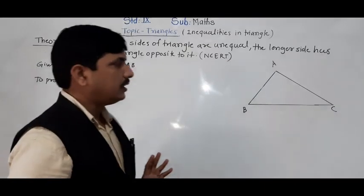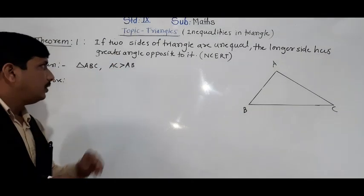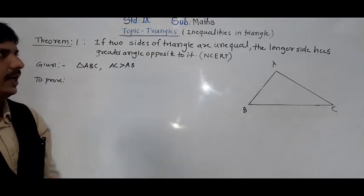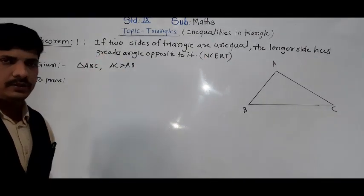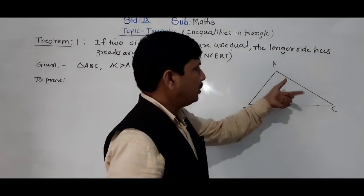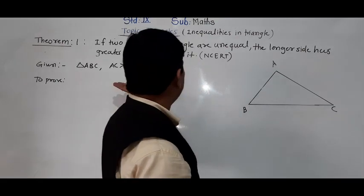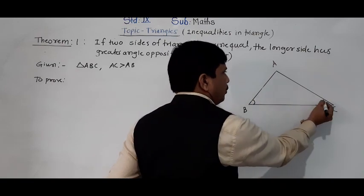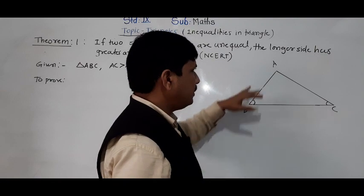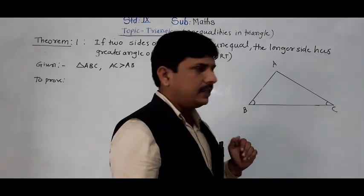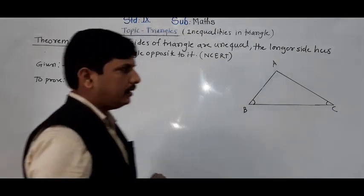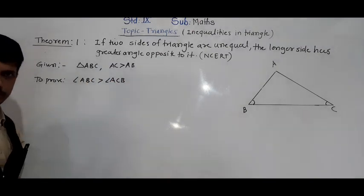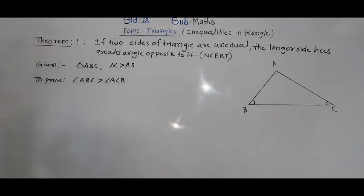The longer side has a greater angle opposite to it. AC is the longer side, and the angle opposite AC is angle B. The angle opposite AB, the shorter side, is angle C. So we have to prove angle ABC is greater than angle ACB. Directly we cannot prove this, so we need to do some construction.